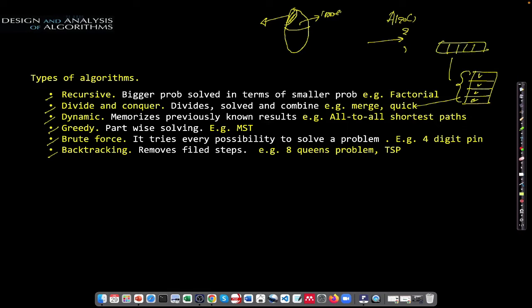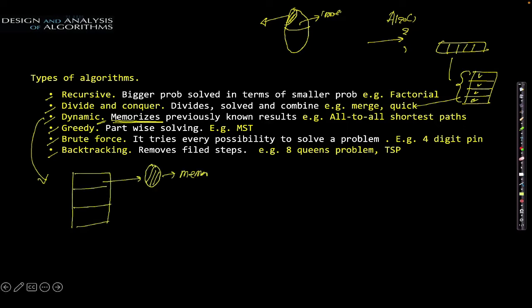The third category is dynamic algorithms, where known results or known solutions are memorized. Like other types, the big problem is divided into smaller ones and each smaller part is solved. Once solved, those memorized results are used in the new portion of the problem. So dynamic algorithms essentially memorize previously known solutions and make use of those solutions in order to solve the rest of the problem.